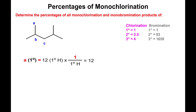I'm going to start with A. A is a primary type of carbon, because it's only connected to one other carbon. There are a total of 12 type A hydrogens — you have three over here, three over there, three down here, and three more over there, so 12 altogether. These are the 12 primary hydrogens. For every primary hydrogen, the rate of chlorination is 1, as you can see in the table here.